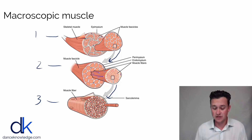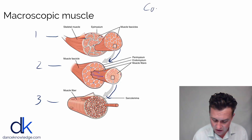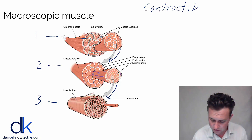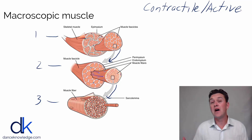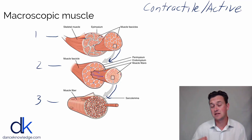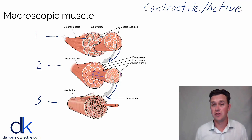Before we go any further, I need to clarify what I'm referring to when I say elements. The two main structures that we have in a muscle are what we refer to as the contractile or active elements. That's the functioning unit of a muscle — the part that makes the muscle shorten, uses energy, and ultimately produces force. We're going to look at that in a lot more detail in the following video where we look at the microscopic structure of muscle.